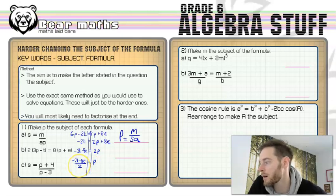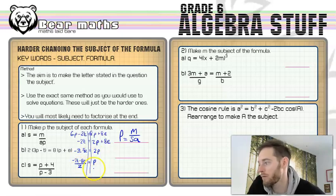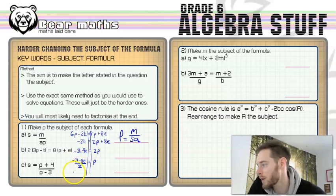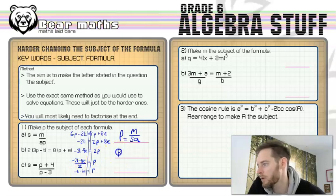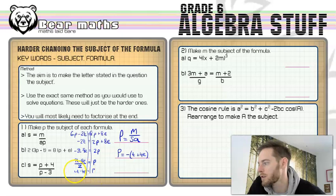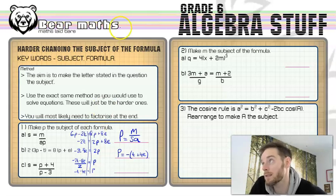We can tidy this up even further. Because we've rearranged it, we want to fully go with it. We're going to halve everything because all terms are even numbers, so that gives us minus t minus 4e equals p. For my final answer, I'll write it neatly with the negative outside the brackets: negative (t plus 4e) equals p. That's just another way of writing the same thing. Lots of steps in that one — this is probably more than grade 6 level, but piecing together things we already know, it's actually all foundation maths.